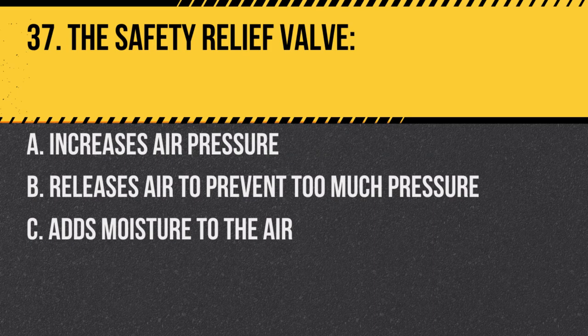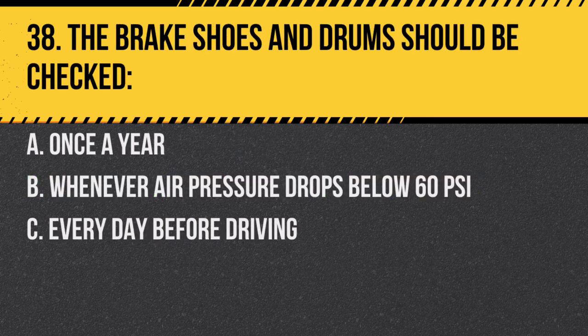Question 37. The safety relief valve: A. Increases air pressure. B. Releases air to prevent too much pressure. It ensures the system doesn't become over-pressurized.